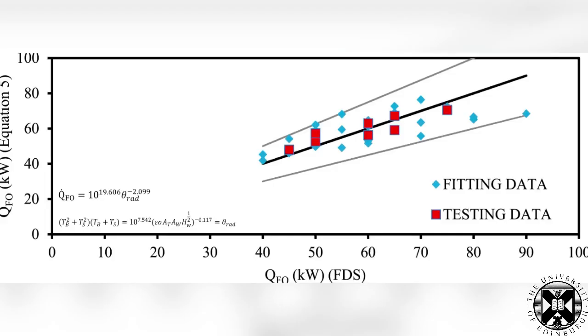After that, we conducted eight other thermally thin bounded compartment fires via FDS to check the accuracy of the new correlation, and as shown in this figure, the red dots for the testing compartments matched well with the new equation with variation of only 10 to 15 percent, which shows the good accuracy of this new correlation.